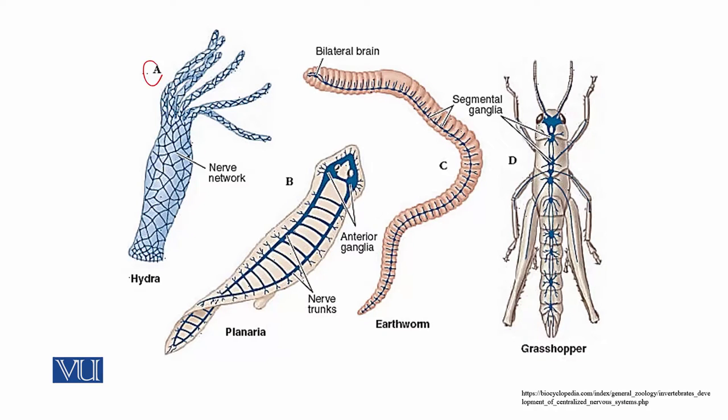Now look at this figure. The first image shows Hydra, which has the simplest nervous system — a nerve net. The second image is about Flatworm, specifically Planaria. As you can see, the nervous system of the Flatworm consists of simple linear nerves that are connected to a complex neuronal network.